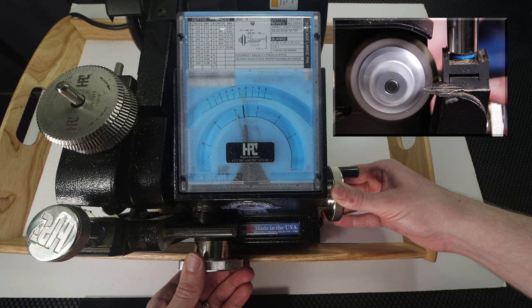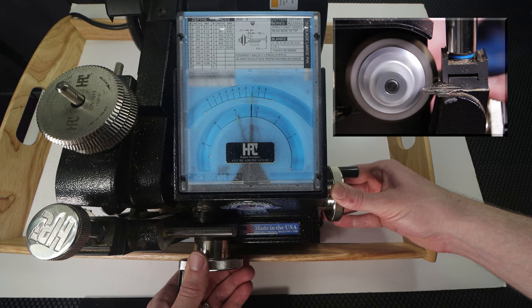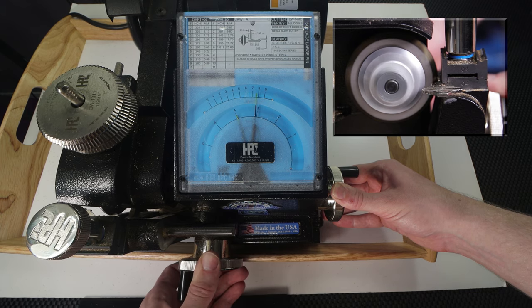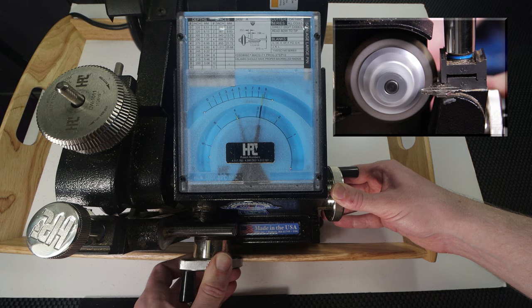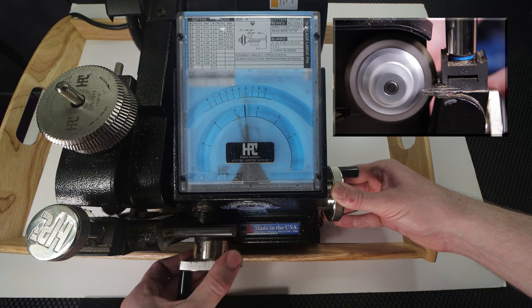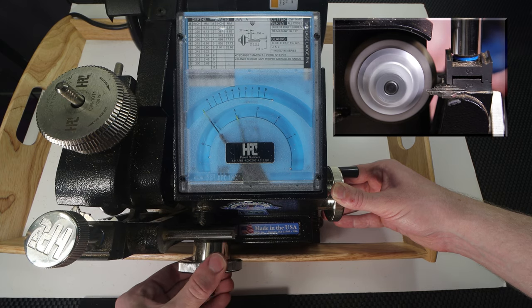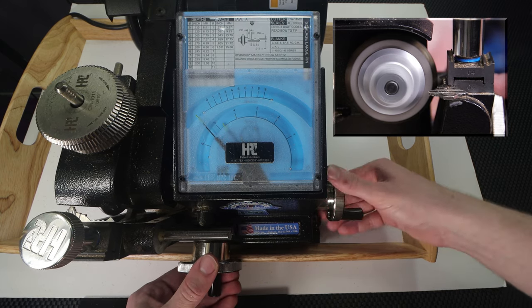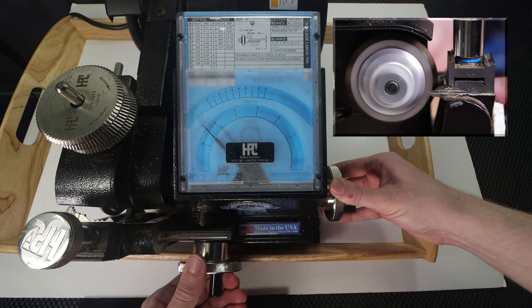We're cutting to the maximal depth depending on whichever key we're working on, whether it be Schlage, Kwikset, Master Lock, American Lock, Yale, any key that you can imagine. You're going to want to cut down to the maximal position. Now we're going to our last position which is going to be 5.